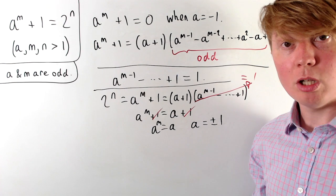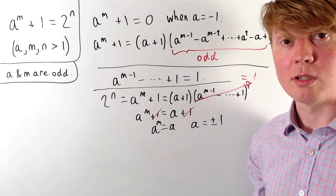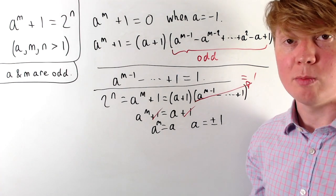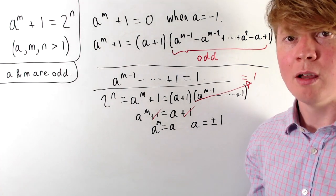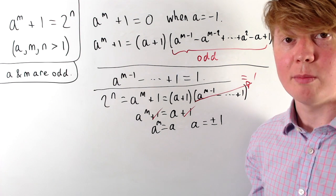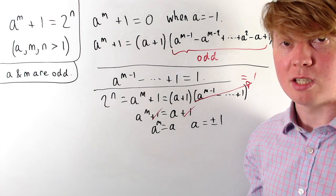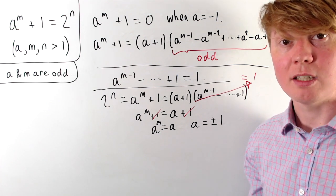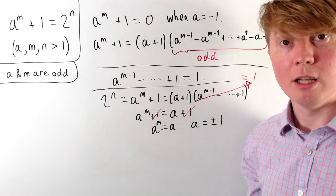Don't forget there were lots of solutions where we allowed a, m, and n to equal 1, and we can also find more solutions by setting them equal to 0 or introducing negative integers.